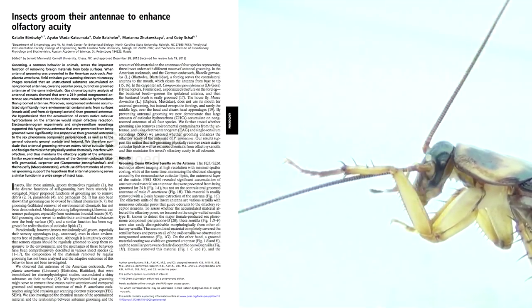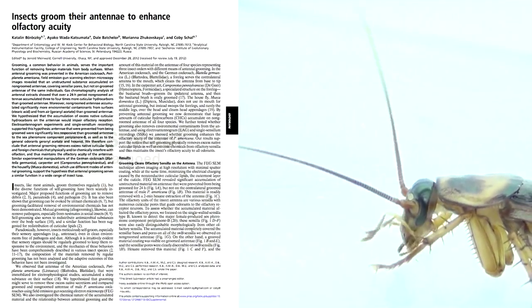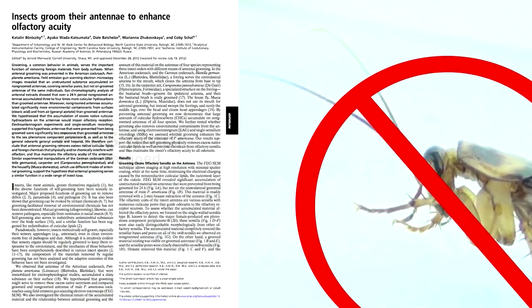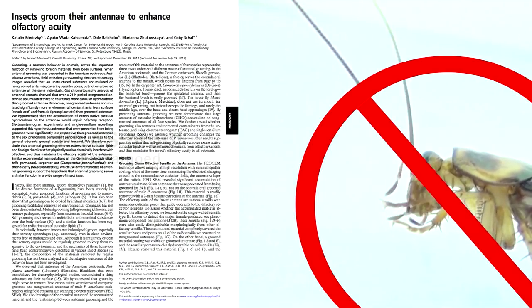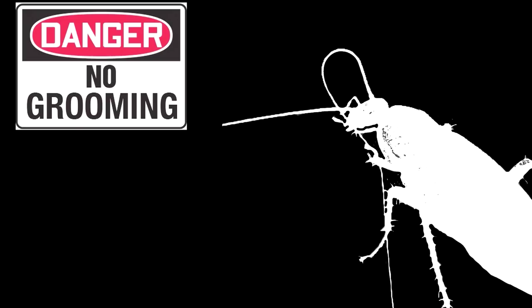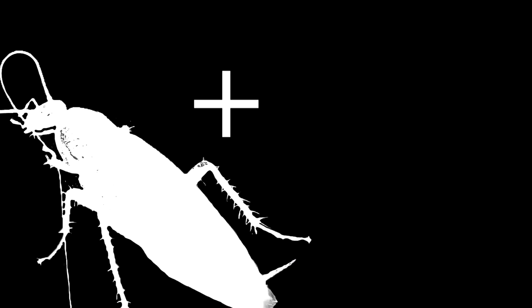To understand why they groom, Shaw had to prevent the cockroaches from grooming. But how? The simplest way is to glue the mouth shut. The less simple and more roach-friendly way is to use something akin to a dog cone.